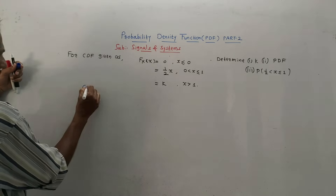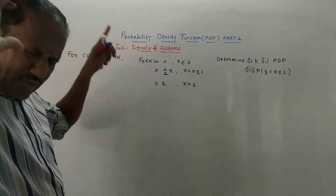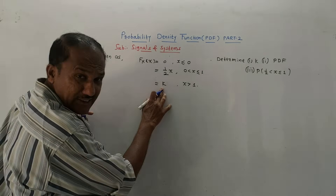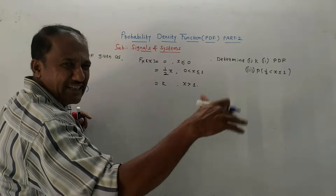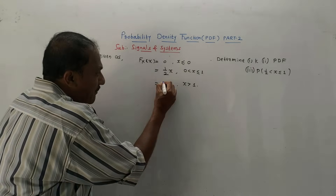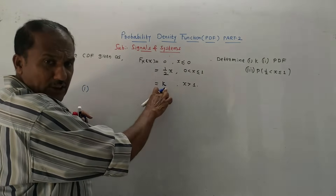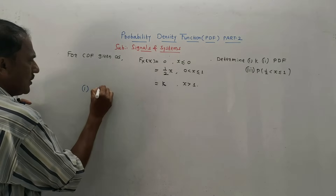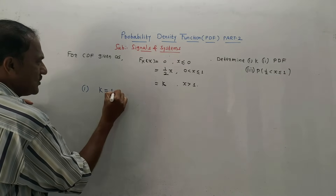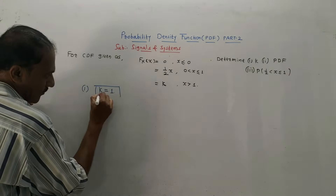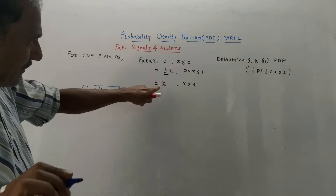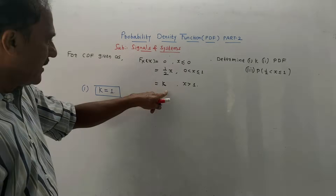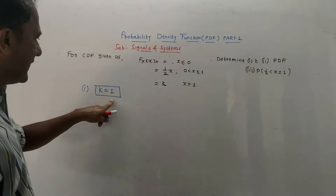For the first part, calculate the value of K. Always equate the last constant value to 1. Here the last term is simply K, so K equals 1. This is the answer of the first part. As always, whatever the constant last term is, equate it to 1 to get the value of K.